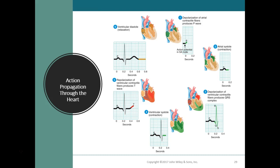Ventricular systole begins right after the QRS complex appears on the ECG. As contraction proceeds from the apex toward the base, blood is squeezed upward toward the semilunar valves. Repolarization of the ventricle then begins at the apex and spreads through the ventricular myocardium, producing the T wave on the ECG. Shortly after the T wave begins, the ventricles start to repolarize and relax — this is known as ventricular diastole.